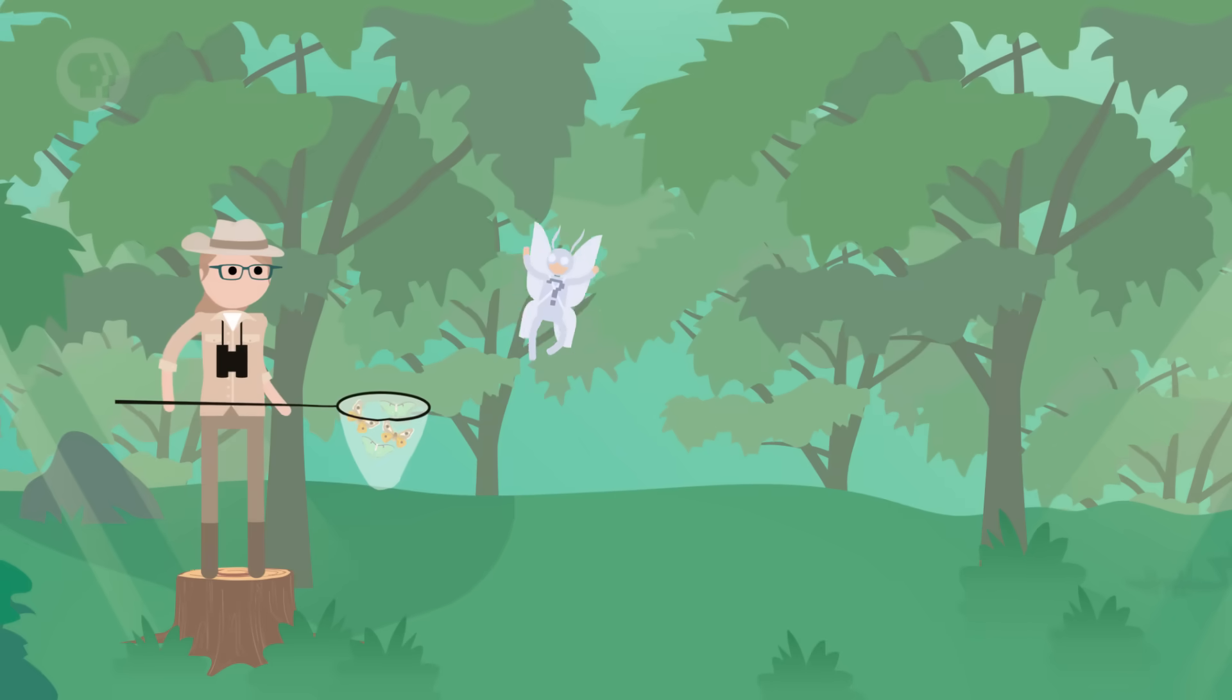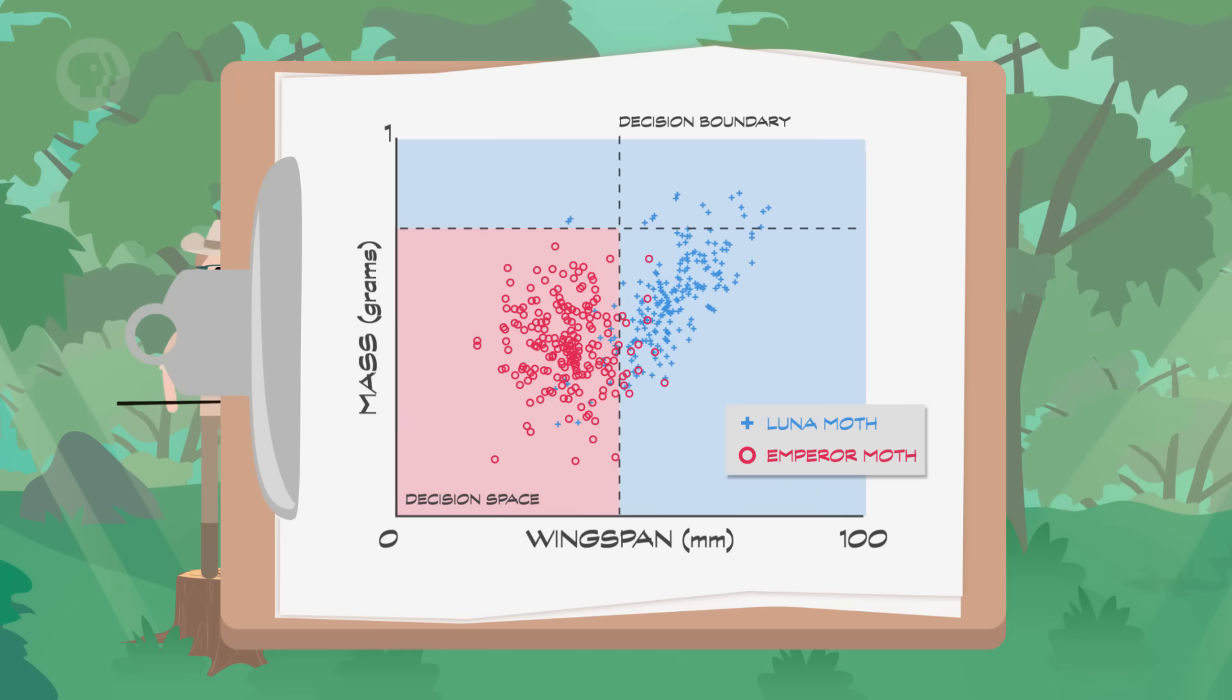Now, using these decision boundaries, if we go out into the forest and encounter an unknown moth, we can measure its features and plot it onto our decision space. This is unlabeled data. Our decision boundaries offer a guess as to what species the moth is. In this case, we'd predict it's a lunar moth.